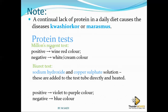You can test for proteins using Millon's reagent. If the result is positive, it is going to be wine red — it will look like wine, which is why it is called wine red. If the result is negative, it is going to remain white or creamy. So if you add Millon's reagent to a sample containing proteins, it turns red; if there are no proteins, it looks white.